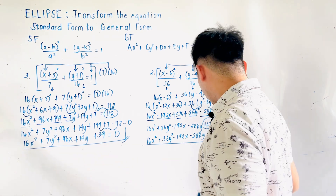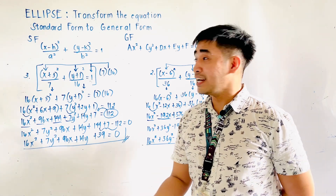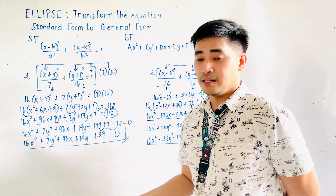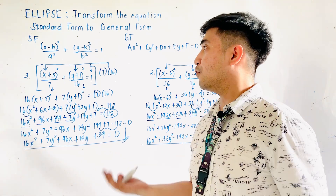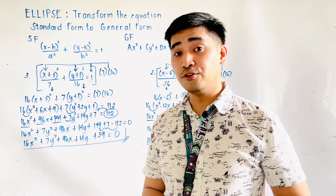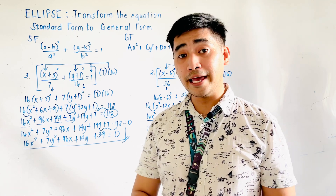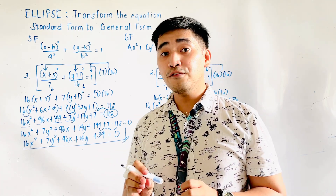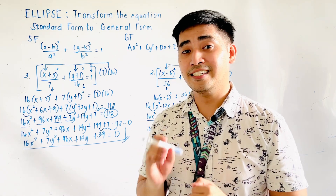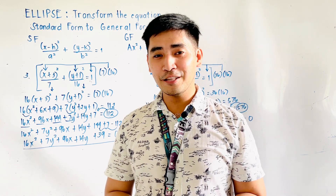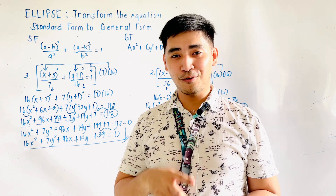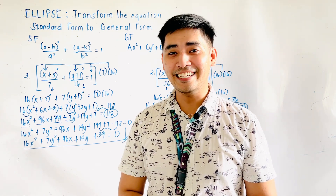That is how we transform the standard form to the general form of an ellipse. Always remember that if you are transforming from standard to general, find a factor based on the denominators of the first and second terms on the left side. Once again, I am Engineer Jod Edward Hernandez saying that mathematics is always fun. Goodbye and God bless.